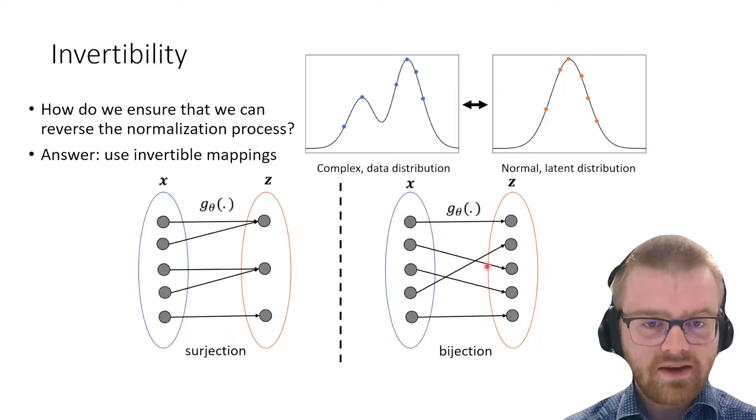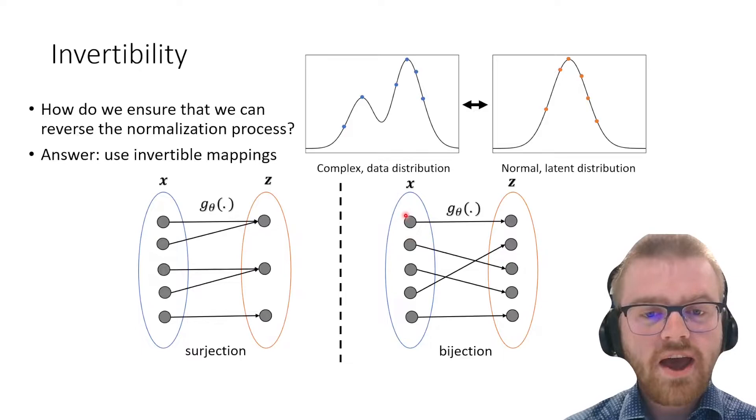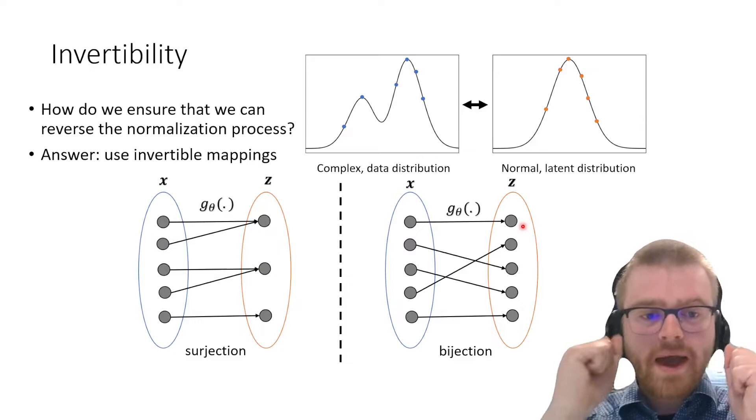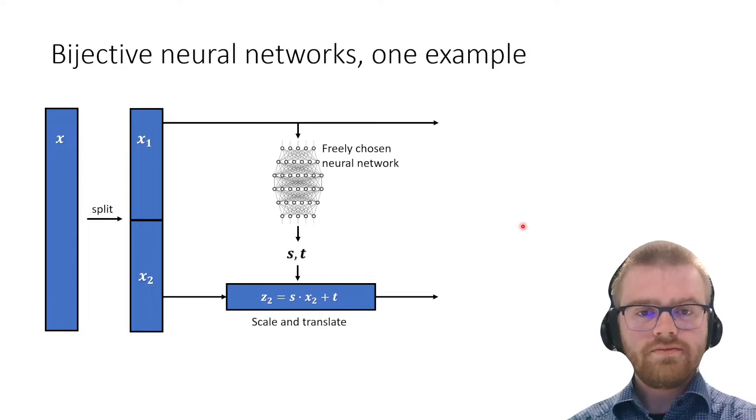Normalizing flows can only work on bijective functions. A bijective function is any function that maps every point in x space to a unique point in z space, so we can always move back and forth exactly between the two domains.